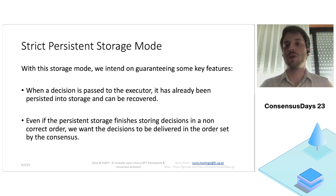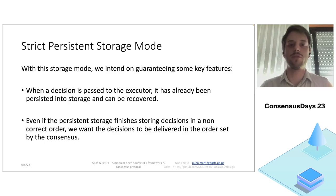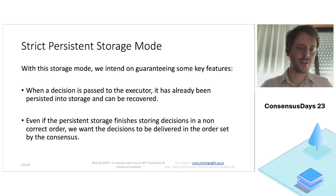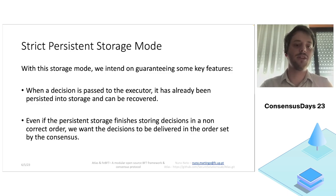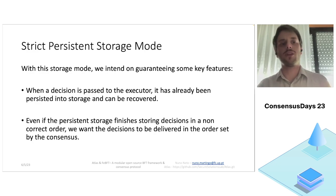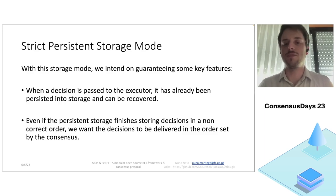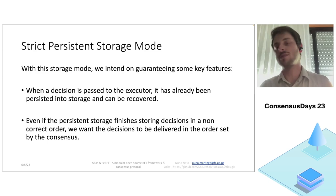In strict persistency mode, when a decision is passed to the executor it has already been persisted in storage and can be recovered by any replica in the quorum. This means that when a client receives f+1 replies to a request, that request will never be backtracked and replicas can always recover it, even in the case of generalized failure of all replicas. We also have to maintain the order set by consensus even if persistent storage finishes storing decisions out of order, so we introduced a layer between the ordering protocol and the executor to receive decisions and storage notifications and determine which decisions can be passed to the executor.